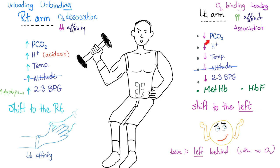In the resting left arm, CO₂ is relatively low, H⁺ concentration is decreased, temperature is lower, and 2,3-BPG is decreased — these are left shifters. With the left shift, the tissue is left behind without oxygen, because the left arm doesn't need it — we save oxygen for the right arm that needs it more. With the left shift, oxygen stays on the hemoglobin: it's coupling, loading, association, and increased affinity between hemoglobin and oxygen.